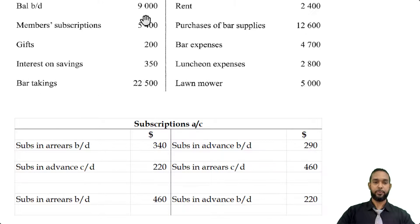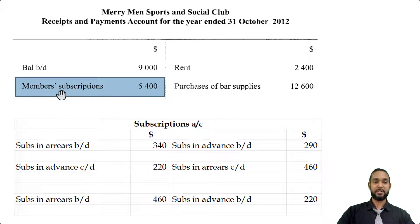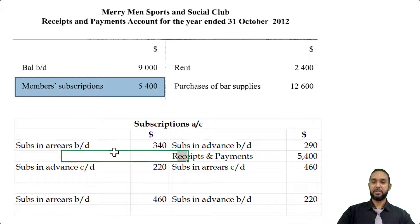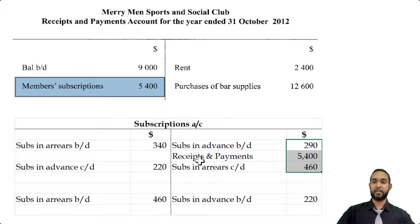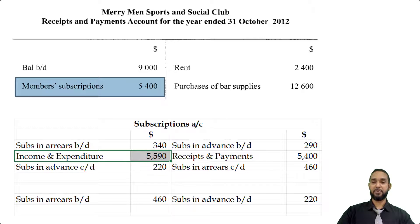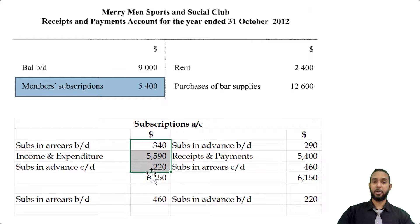The only other item for subscriptions is in the receipts and payments account on the debit side — members subscriptions of $5,400. This is the total cash received from members. Since it's on the debit side there, it goes on the credit side of the T-account. The missing figure — usually the income statement figure — is found by populating all relevant information and balancing. Adding the credit side items and subtracting the debit side items gives us subscriptions earned of $5,590. When totalled, both sides will match. That's the subscriptions account done.